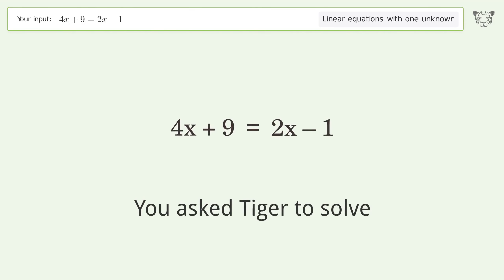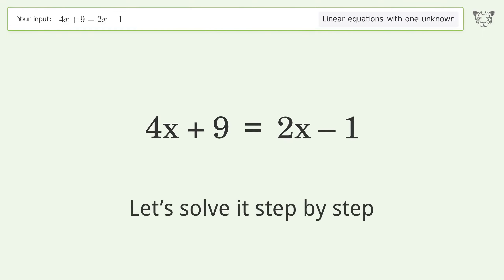You asked Tiger to solve. This deals with linear equations with one unknown. The final result is x equals negative 5. Let's solve it step by step.